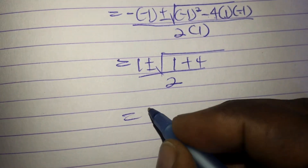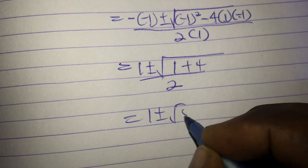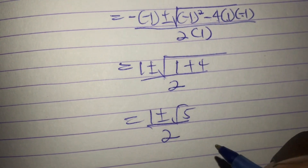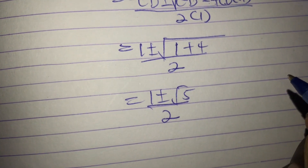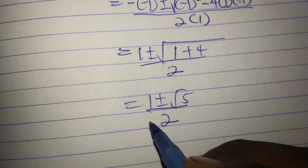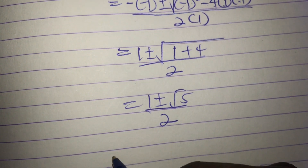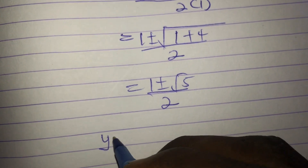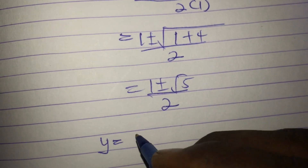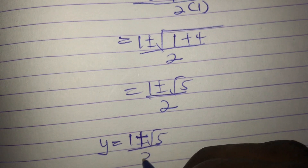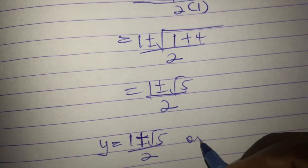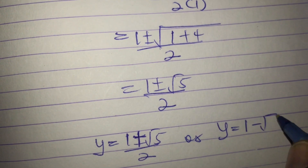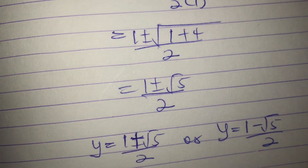So y equals 1 plus or minus root 5, divided by 2. This gives two values: y equals (1 plus root 5) divided by 2, or y equals (1 minus root 5) divided by 2.